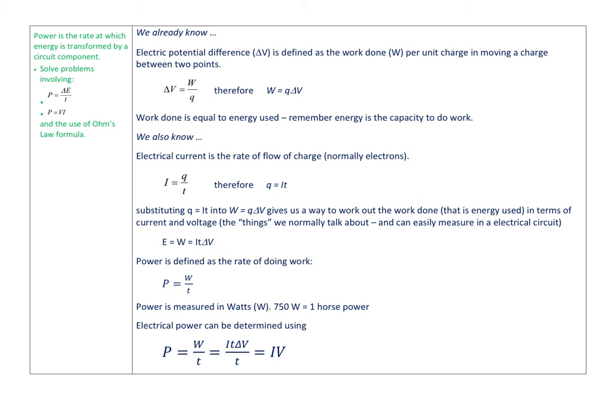Then when we did electrical current, we talked about that electrical current is the flow of charge, normally electrons. I equals Q over T. We can rearrange that formula to get Q equals I times T, so the amount of charge is equal to the current times the time that it's on for.